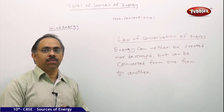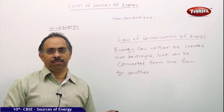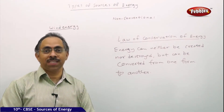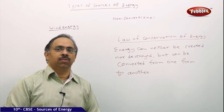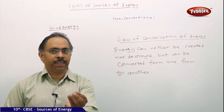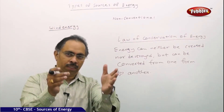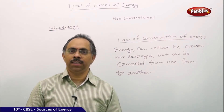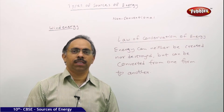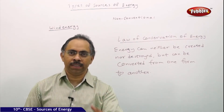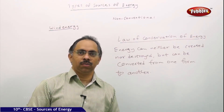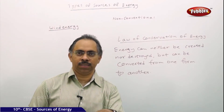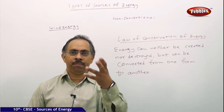According to this law, there is no wastage of energy — nothing called energy waste. But why do we colloquially say 'don't waste energy'? Consider this: you ignite a gas burner, place a pressure cooker on the flame, and cook food. The chemical energy stored in LPG is burned, producing heat — so chemical energy of LPG is converted to heat energy.